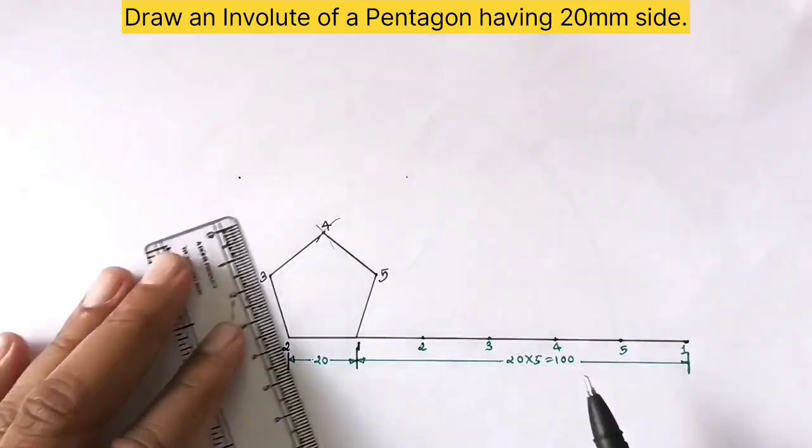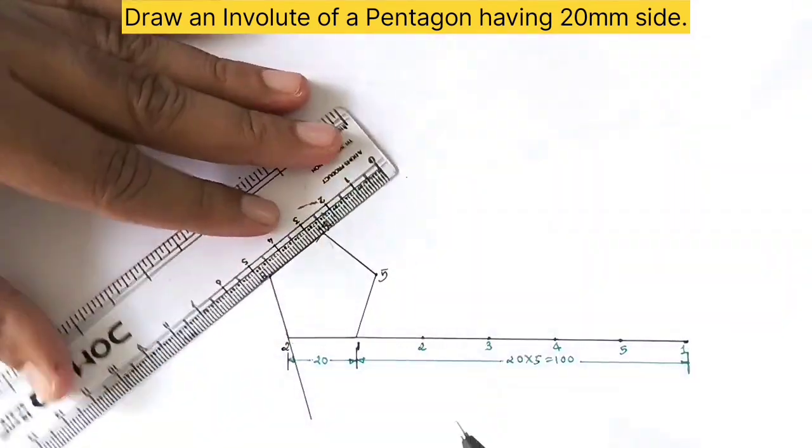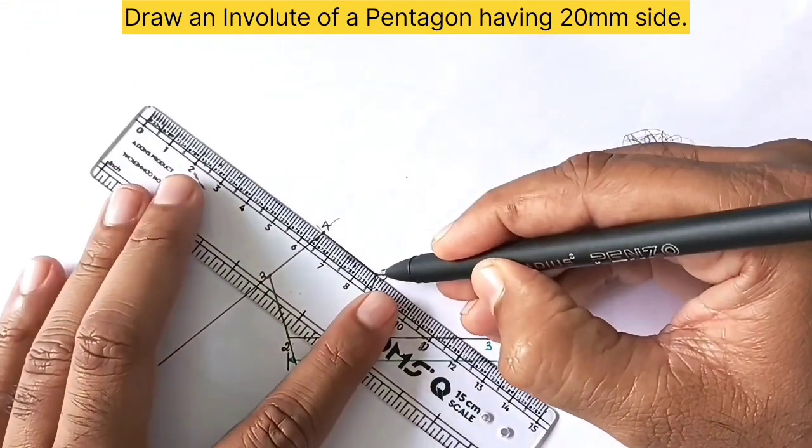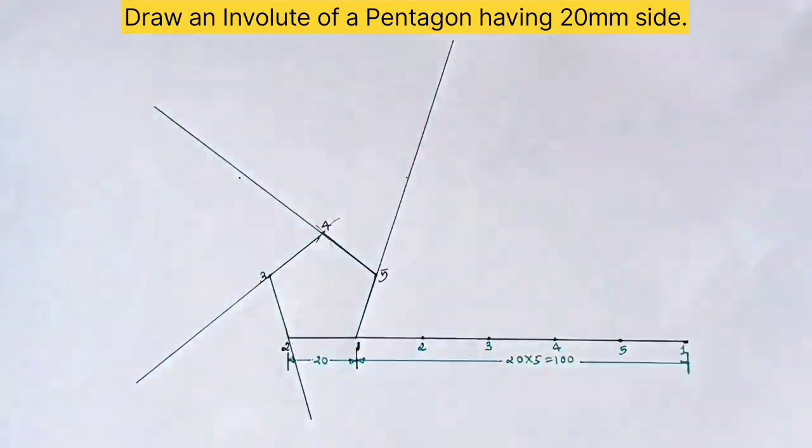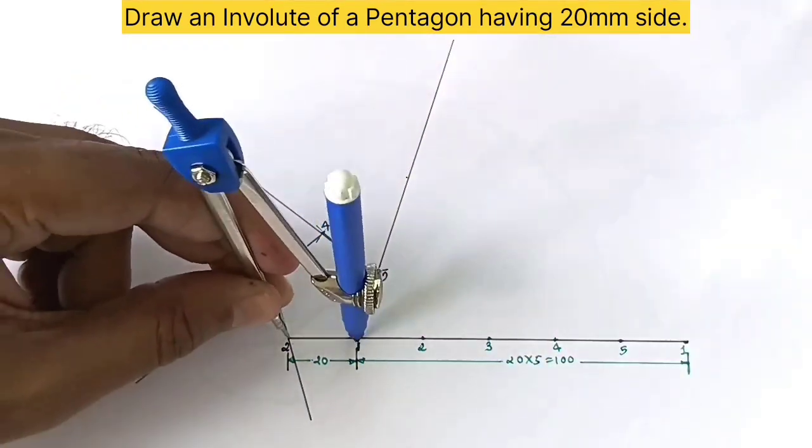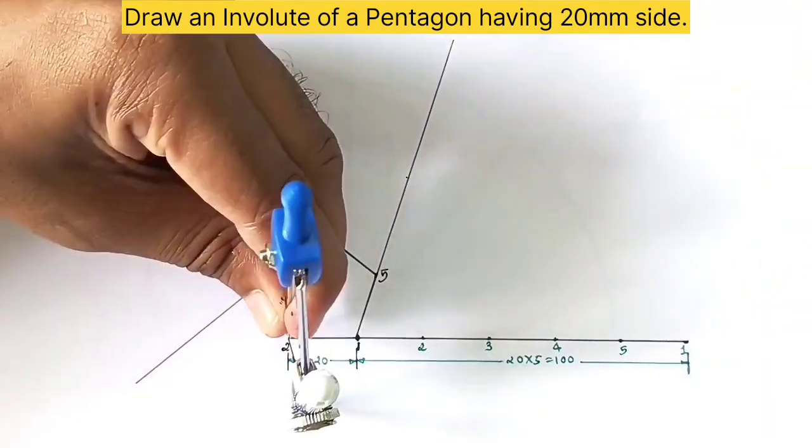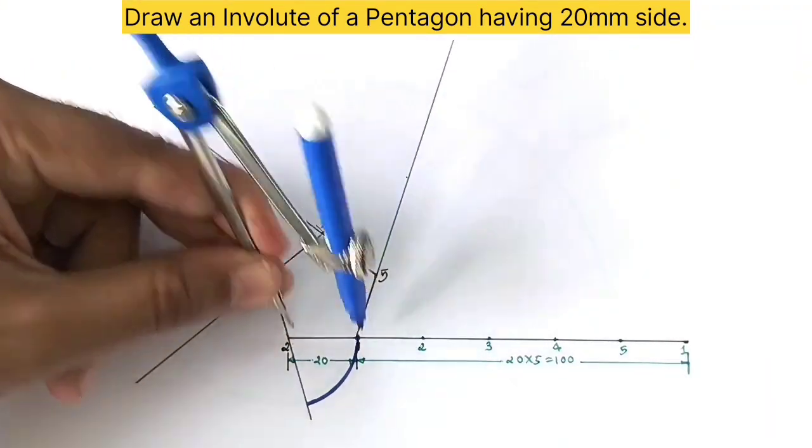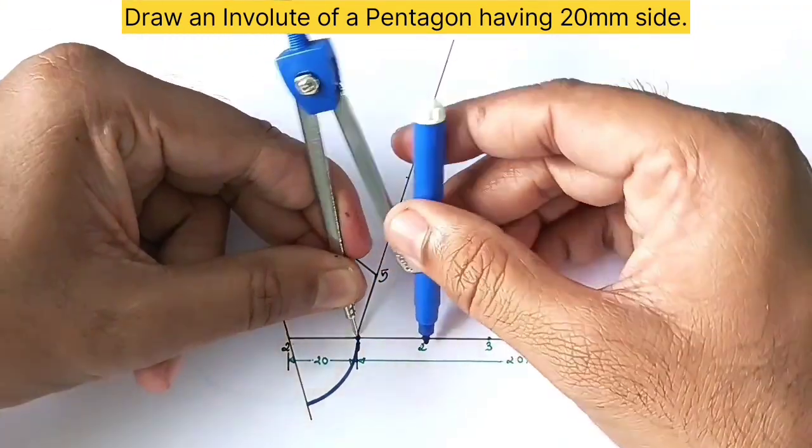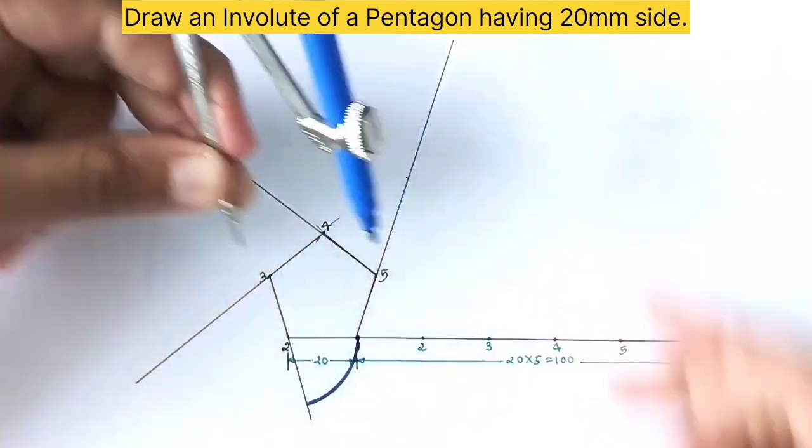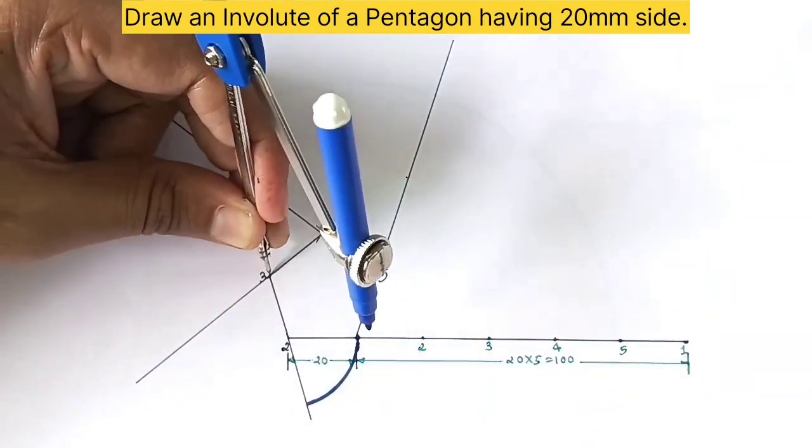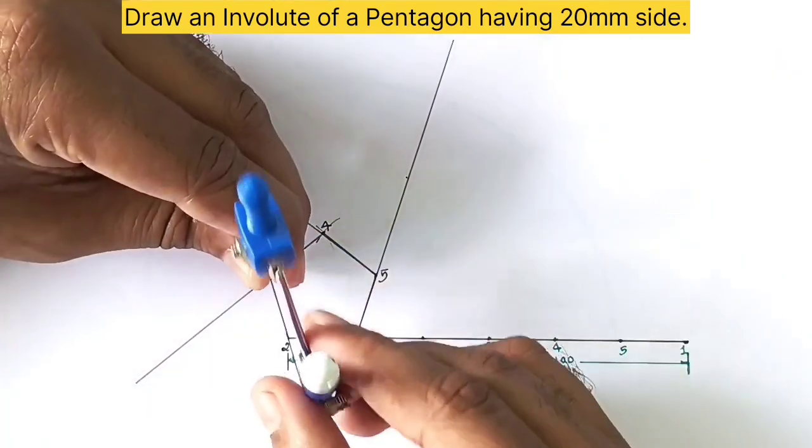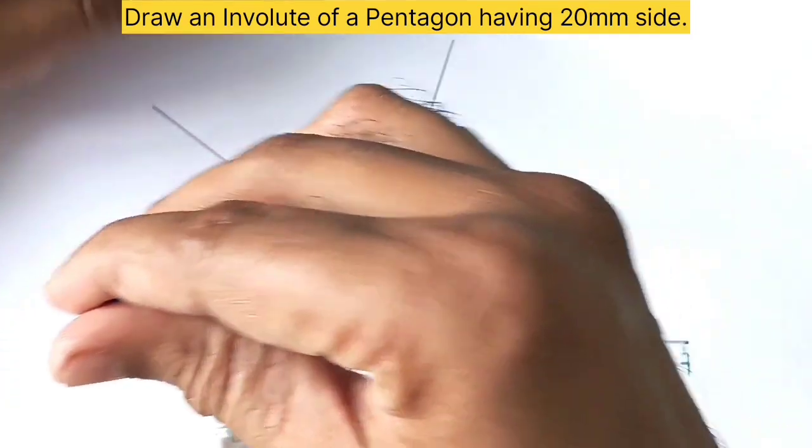After this, we have to extend the lines from points 2, 3, 4, and 5. Now take a compass and using point 2 as a center, draw an arc on this line. Next, adjust it to the length 1 to 3, and using point 3 as a center, draw an arc on this line, and so on.